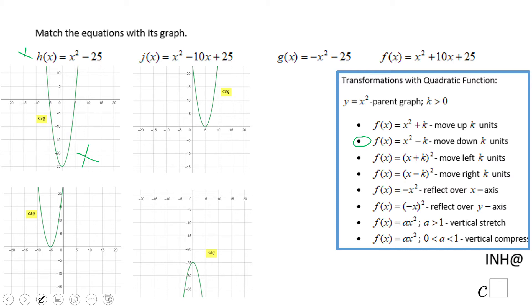For the others, we can also look at the third one, which has -x² - 25. This is reflected over the x-axis and moves 25 down. The only one that has those transformations is the last graph. But for the other two, let's take a look.